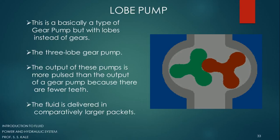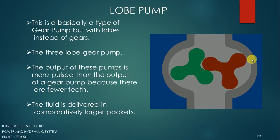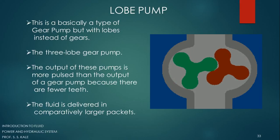In the market there are various types of lobe pumps: two-lobe, four-lobe, and five-lobe pumps. In this case, the output will be pulsating compared to the gear pump. In a gear pump there is basically a series of teeth providing a continuous flow of fluid, but with only three lobes, the output of fluid may be pulsating.